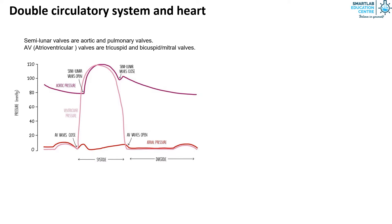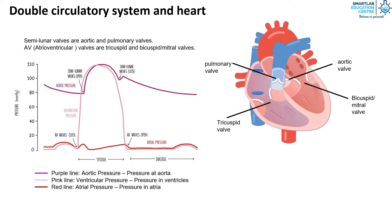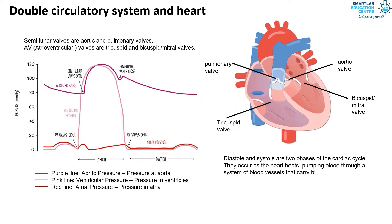We will now look at the cardiac cycle in greater detail. In this cardiac cycle graph, the purple line represents the aortic pressure, the pink line represents the ventricular pressure, and the red line represents the atrial pressure. It is important to know what diastole and systole are — they refer to the two phases of the cardiac cycle. Systole occurs when the heart contracts to pump blood out, and diastole occurs when the heart relaxes after contraction.